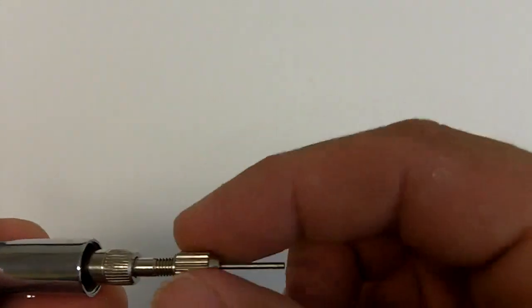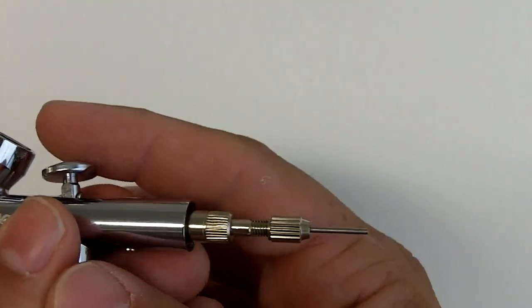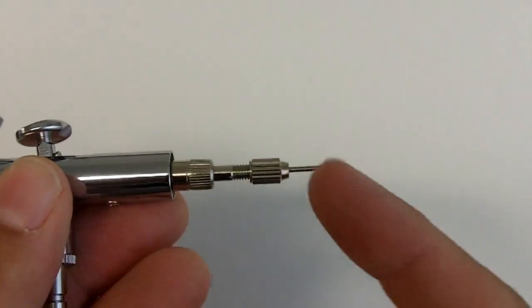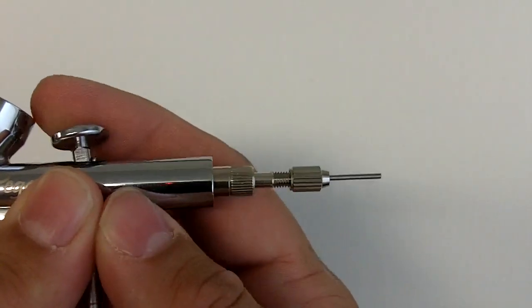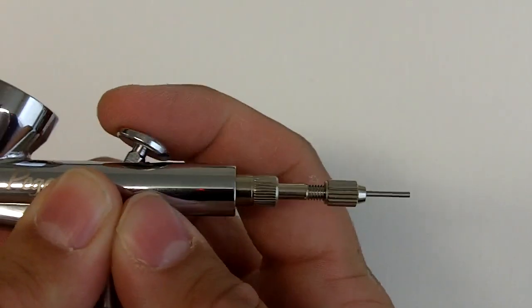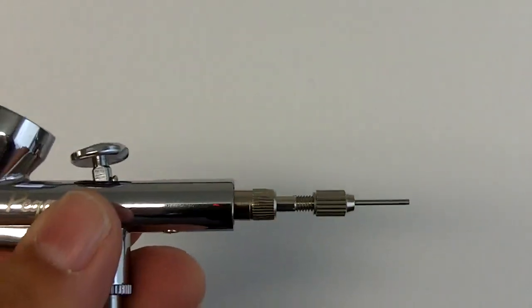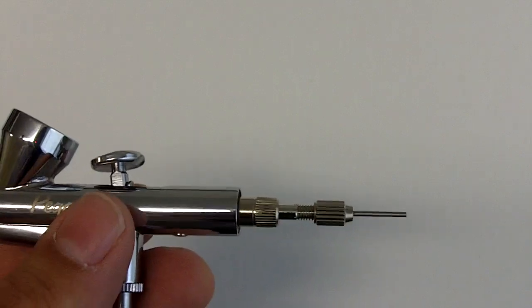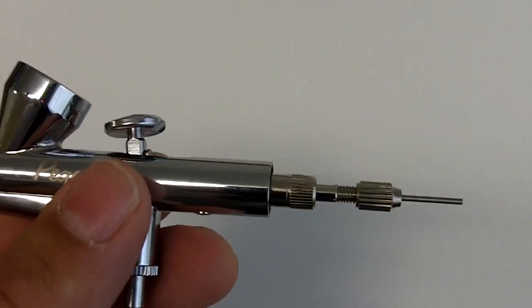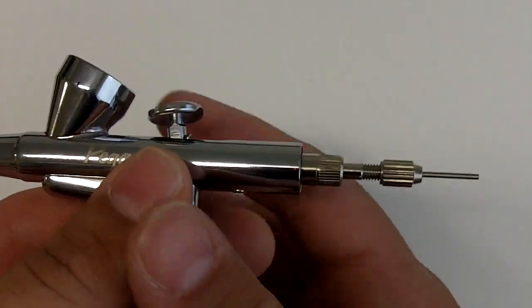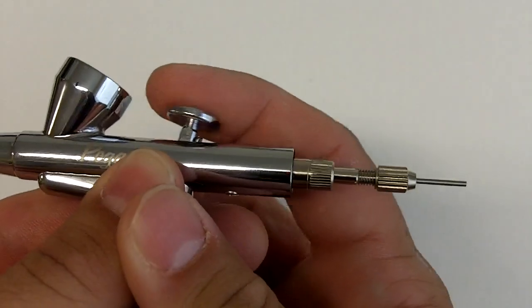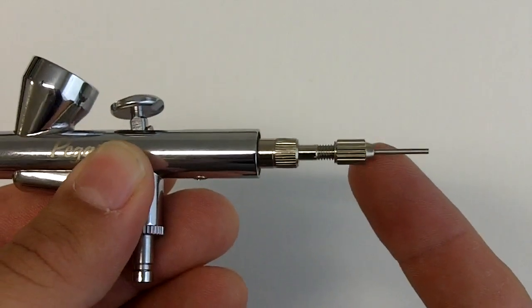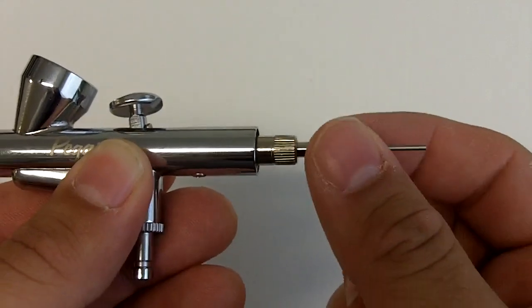And again, this has to be tight around that needle because as this pulls back, you see as I'm pulling that back, it's not moving the needle here. So it's not pulling the needle back. So this is too loose. And that's something that people will run into. They'll say that I have my airbrush gun. Air is flowing through it. The compressor turns on. But when I pull this trigger back, no color comes through.